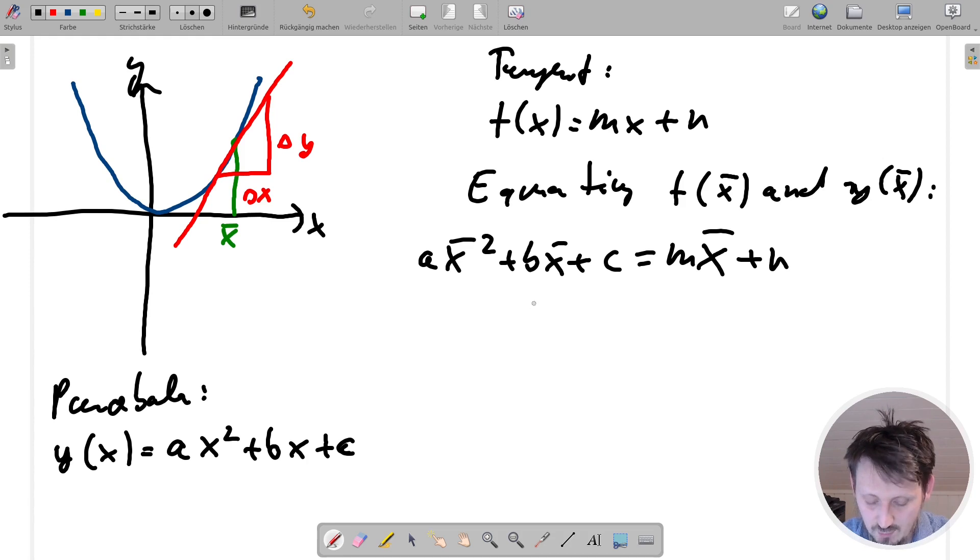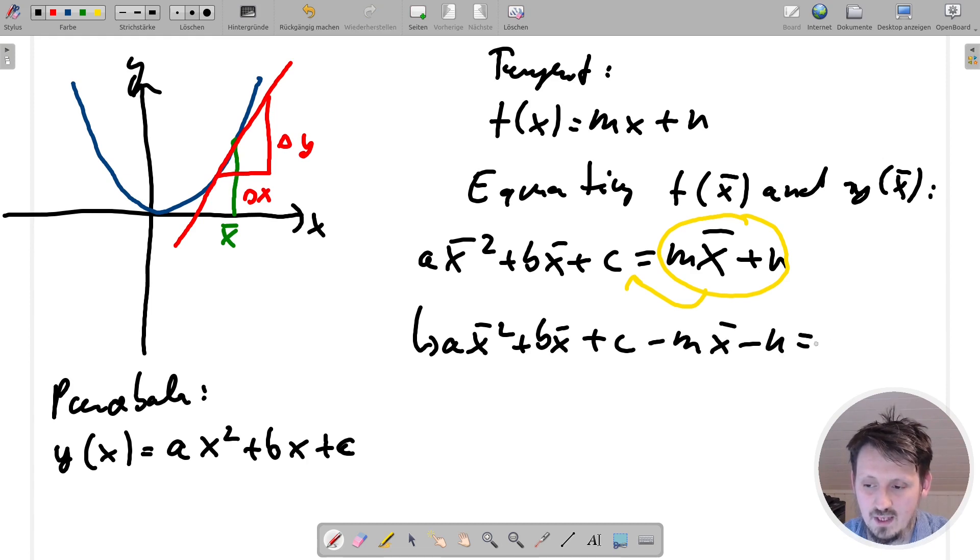Okay. And now we do some algebraic transformation, actually. So the first thing which you will do now, we will bring this part here to the other side. So for example, here we can show it in such a way and then we can write here a x bar square plus b x bar plus c minus m x bar minus n. And this then has to be, of course, equal to zero.